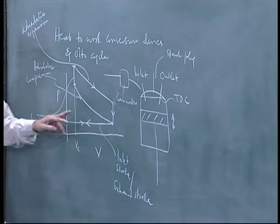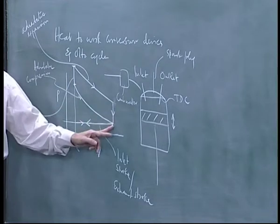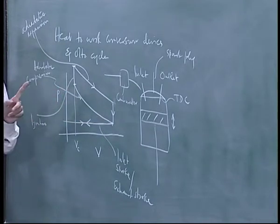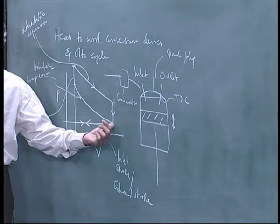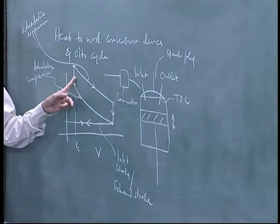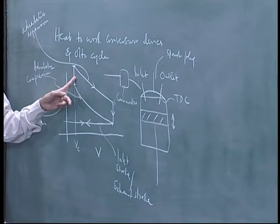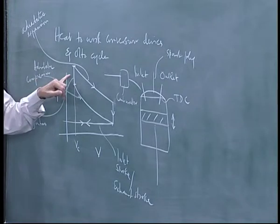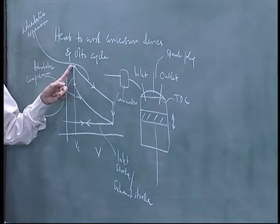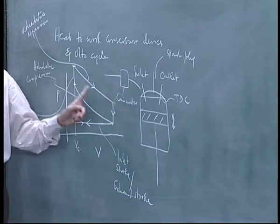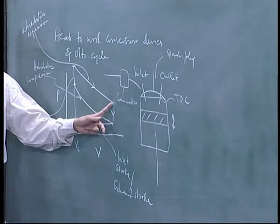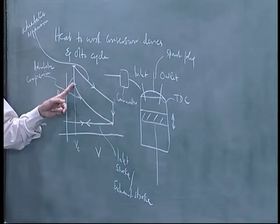If you ignore the inlet and outlet strokes and look at just this cycle, it is a closed cycle. Instead of change in composition, we approximate it as air with a certain specific heat going through a cycle. Here you have heat addition (instead of the reaction) and here heat removal. So effectively you have adiabatic compression, then constant-volume heat addition, then expansion — and the area under the expansion curve on the P-V diagram is the work done by the system.